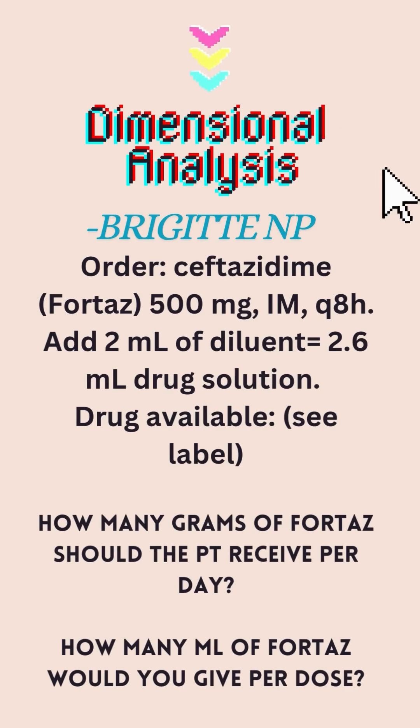So this is a two-part question, but let's break it down. The order is ceftazidine 500 milligrams IM every eight hours. Add two milliliters of diluent, 2.6 milliliter drug solution, drug available, see the label, I will provide that for you. How many grams of Fortaz should the patient receive per day? How many mls of Fortaz would you give per dose?